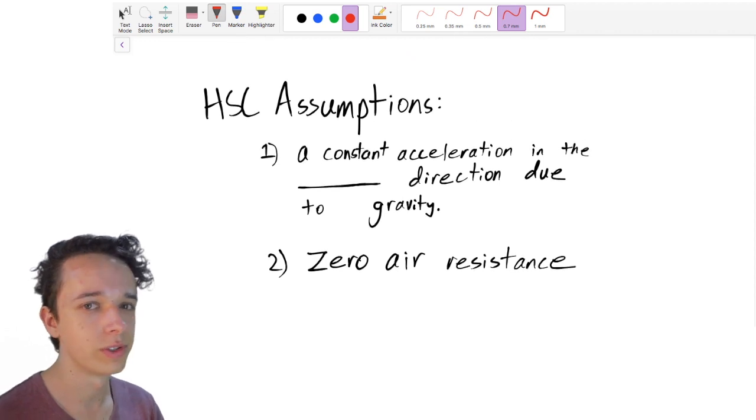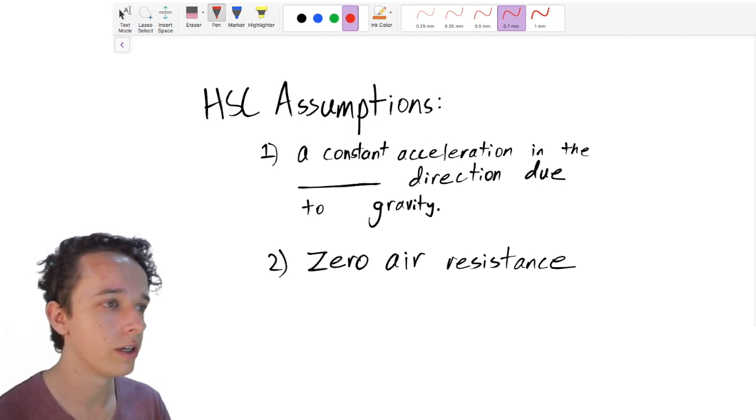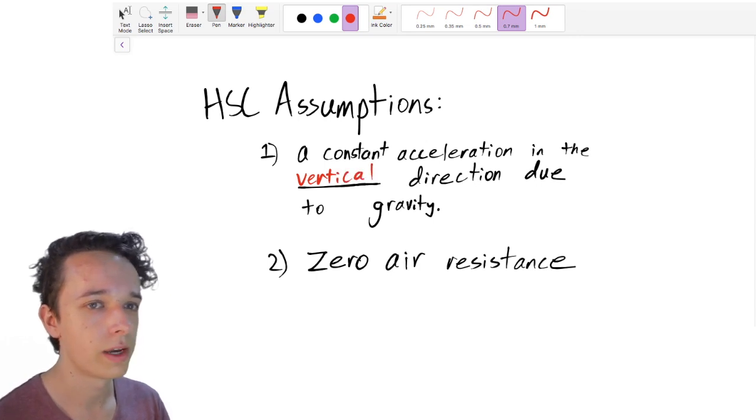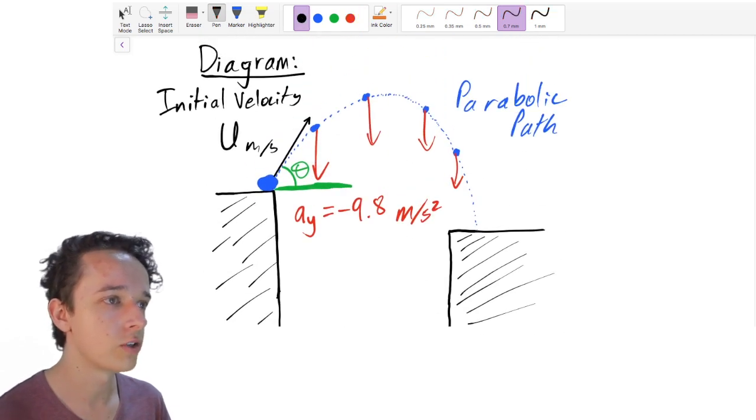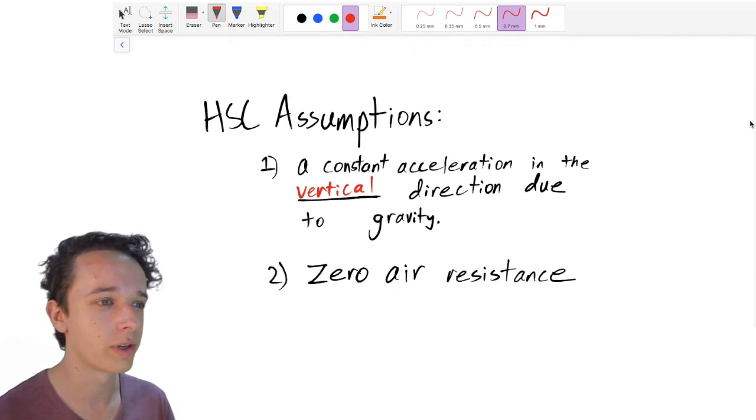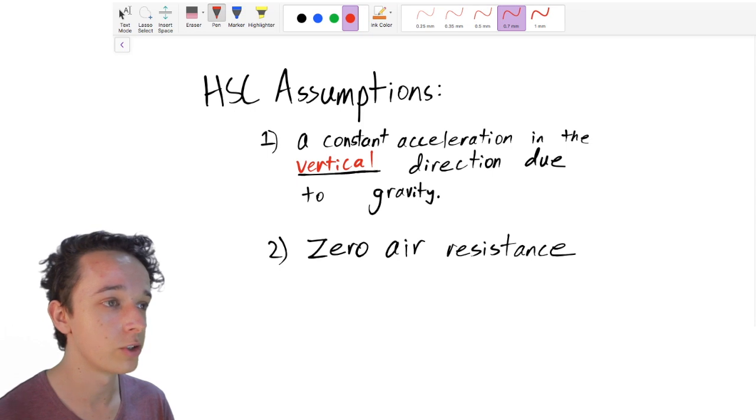So there are two assumptions that you make in HSC physics. The first assumption being that there exists a constant acceleration in the vertical direction due to gravity. And then the second assumption is that there is no air resistance. What would air resistance be? Well, air resistance just means that as the projectile is traveling in this direction, say, it's experiencing a force due to the air that it's colliding with in the opposite direction. We ignore this for HSC physics because it becomes too complicated. So yeah, these are the two assumptions. You won't get a question in the HSC that breaks either of these two assumptions.